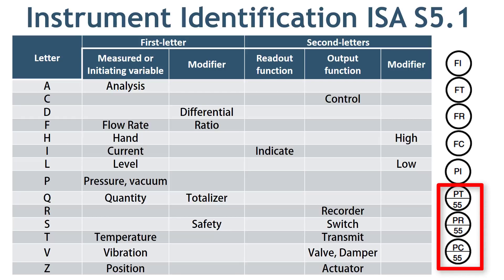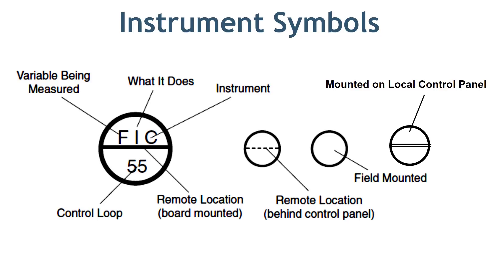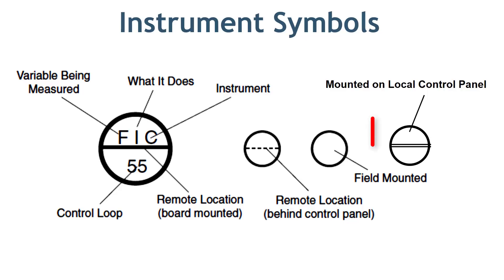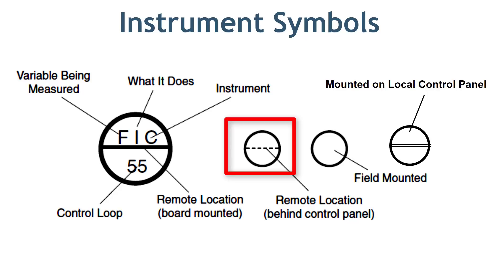In the next slide, I will explain the meaning of the horizontal line on the instrument bubble. If there is a single horizontal line, that means the instrument is located on the main control panel and accessible to the panel operator. No horizontal line means the instrument is installed in the field near the process and is accessible to the field operator. A double horizontal line means the instrument is installed on a secondary satellite local panel in the field. The last type is the instrument bubble with a single dashed horizontal line, which is used for instruments that are inaccessible in the field or hidden or password-protected on the control system.